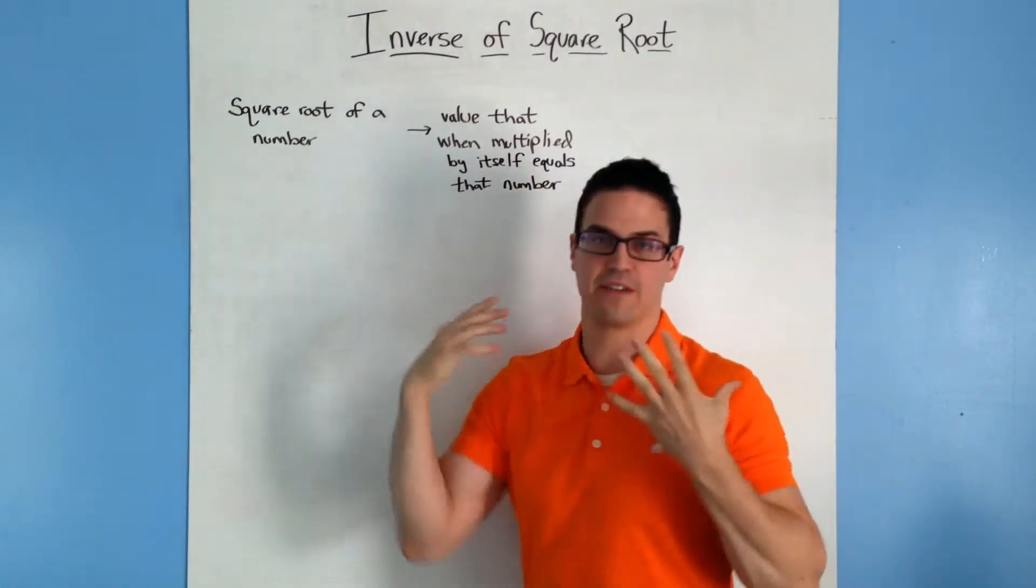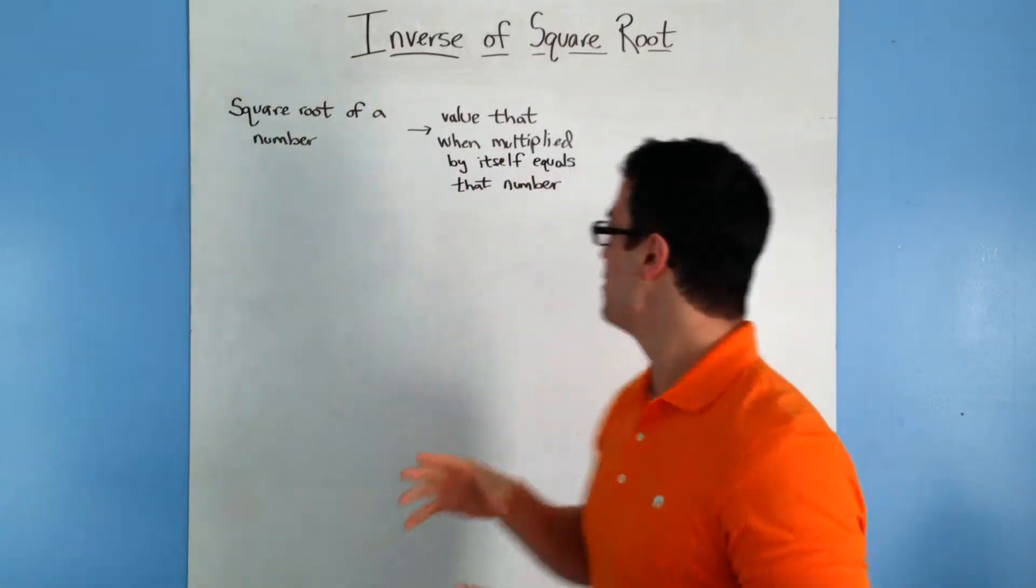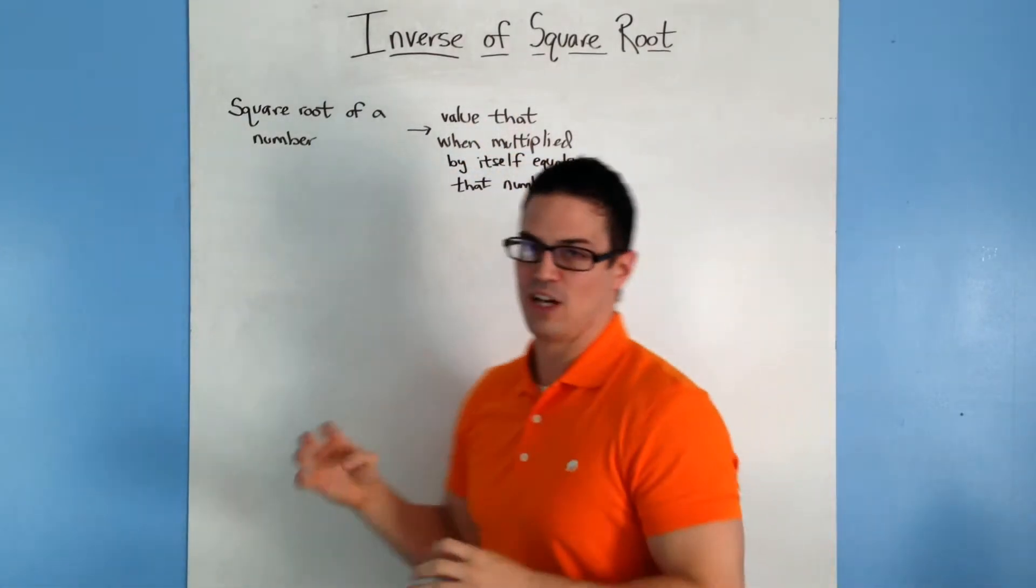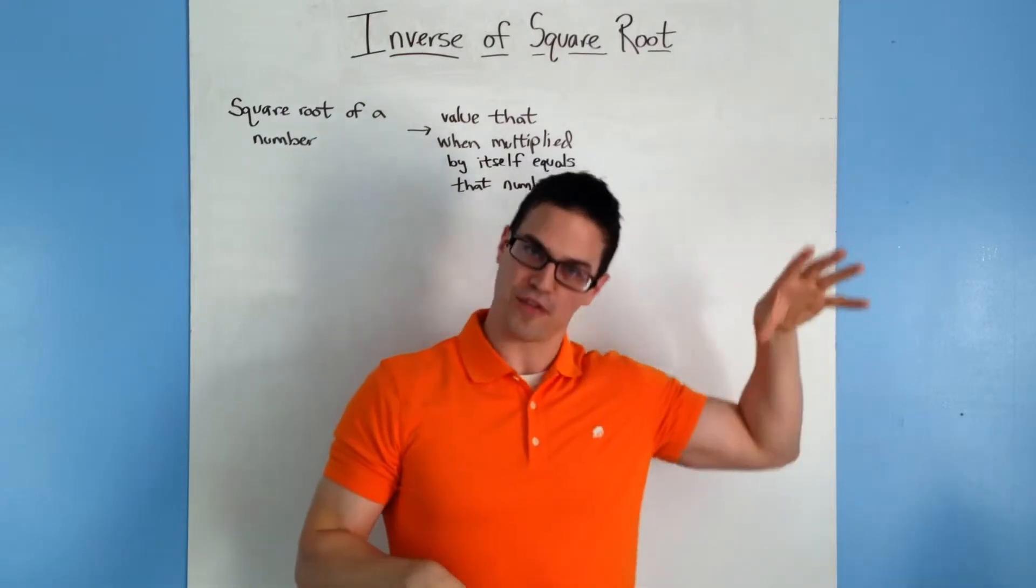So a square root of some number, just think of any number, the square root of that number is a value that when multiplied by itself equals that original number that you thought of.